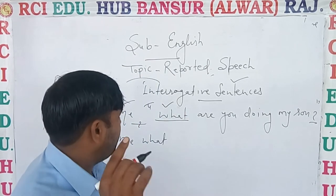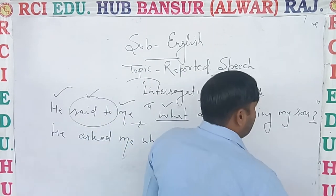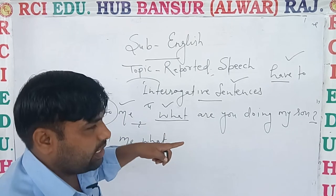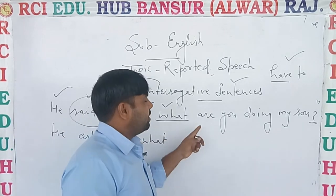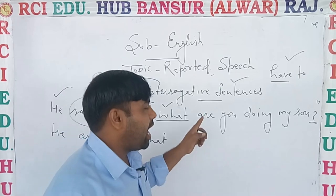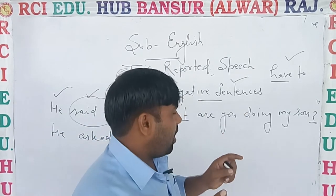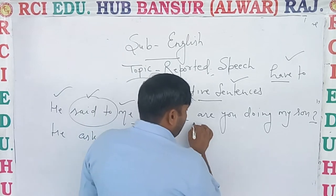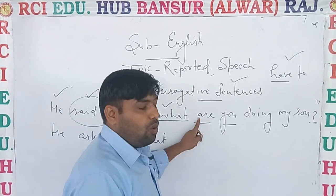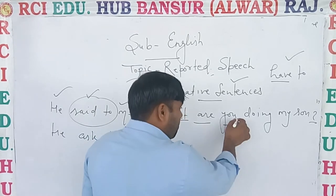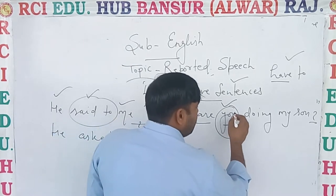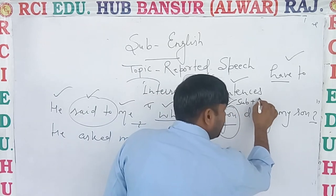So dear students, you just try to understand. We have to change into simple sentences. The indirect sentence given is interrogative, but it is our conversion. When it will change into indirect, then we have to make it simple.